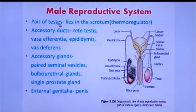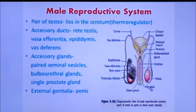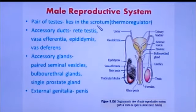The male reproductive system includes a pair of testes. The testes are ovoid in shape and lie in the scrotum. The scrotum is a sac-like structure present outside the abdominal cavity. Normal body temperature is not suitable for spermatogenesis, so the scrotum lies outside at 2 to 3 degrees Celsius lower than the normal internal body temperature. That is why we call the scrotum a thermoregulator.